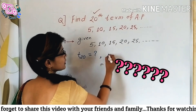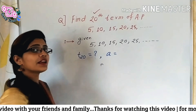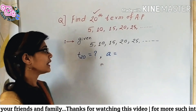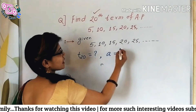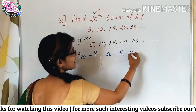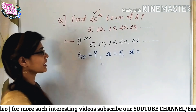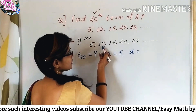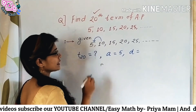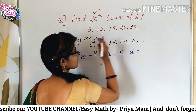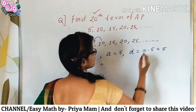Next, आपको formula apply करने के लिए, first A लगने वाला है. And what is A? A is your first number. First number है यह sequence का — 5. Then, difference D, D भी आपको calculate करना है. So, D is equal to — कौन से भी दो terms का difference लेना है. So, second minus first — suppose 10 minus 5. So, D is equal to 5.